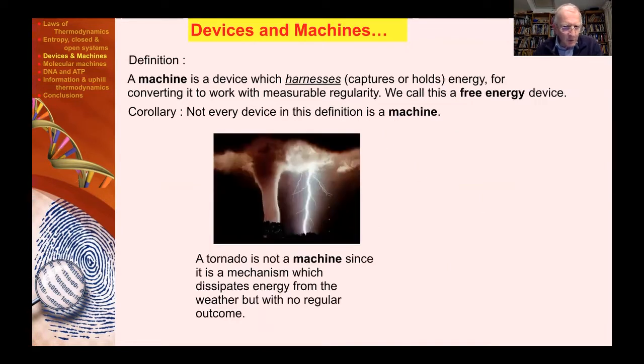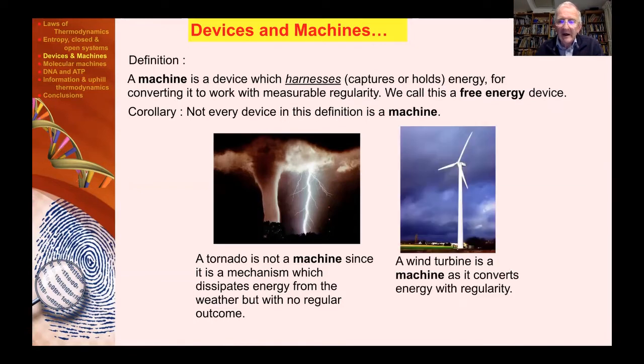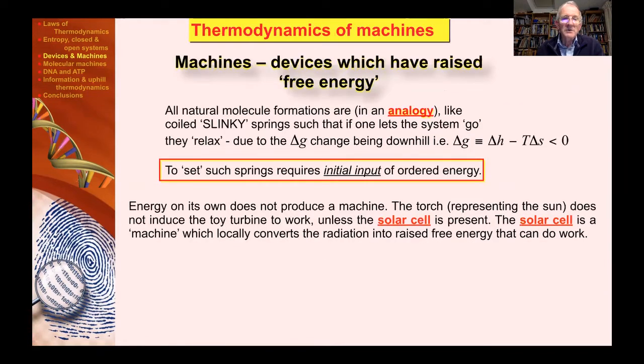Let's take another case. A tornado certainly uses energy, but it's not a machine since it is a mechanism for dissipating energy, but it's not doing it with a regular, predictable outcome. You wouldn't use a tornado to stir your tea in the morning. You need something very precise and measurable. A wind turbine is a machine as it converts energy with regularity. This is what we mean by a machine being a device which locally raises the free energy. Energy on its own does not produce a machine, in answer to Richard Dawkins and others who would try to insist it does.